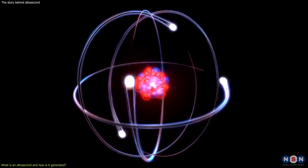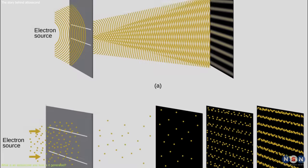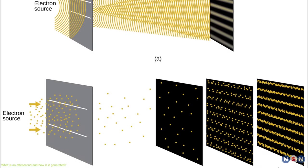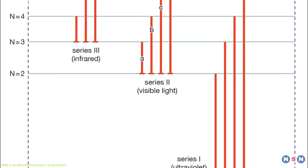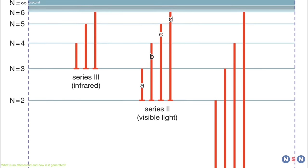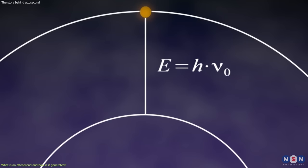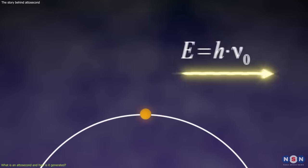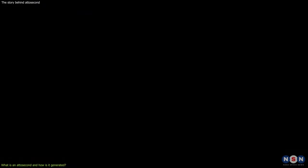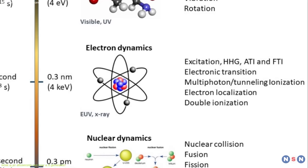Electrons are also governed by the laws of quantum mechanics, which means that they behave both like particles and waves, and they can exist in different states or levels of energy at the same time. When light hits an atom or a molecule, it can excite or ionize an electron from one state to another, or even eject it from the atom completely.